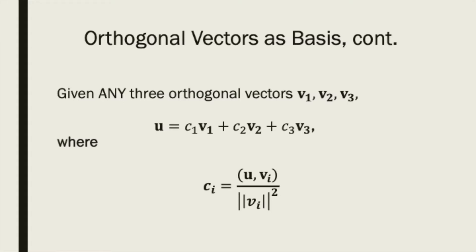Using the constants ci, we can calculate ci by taking the inner product of u and vi and dividing it by the norm squared of vi.